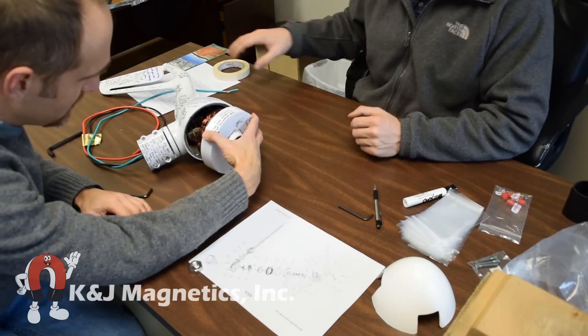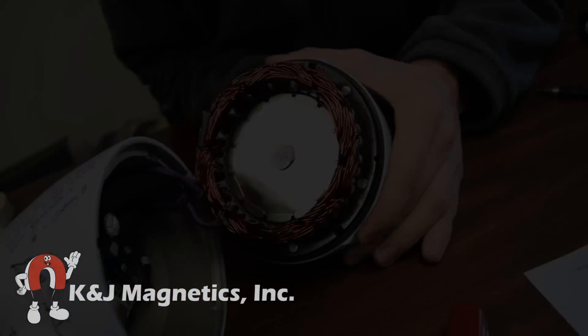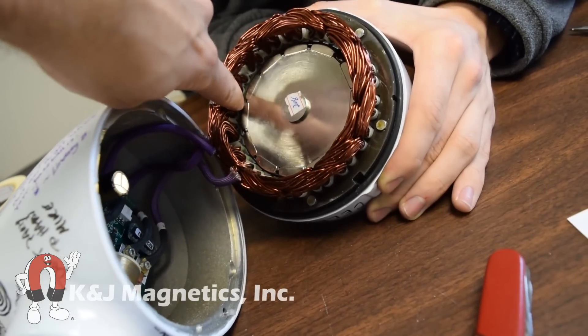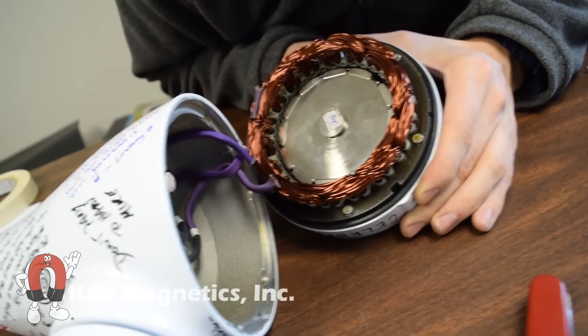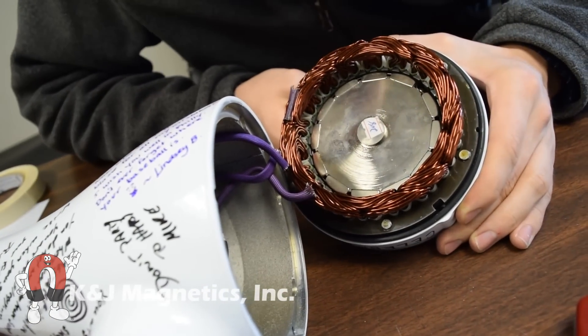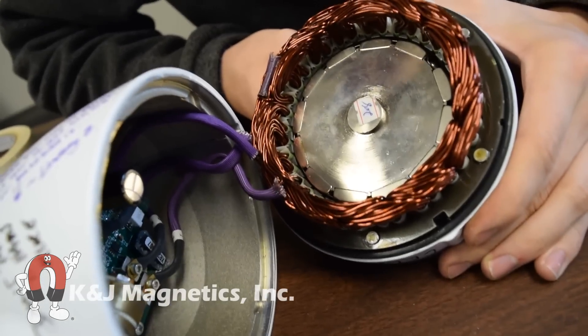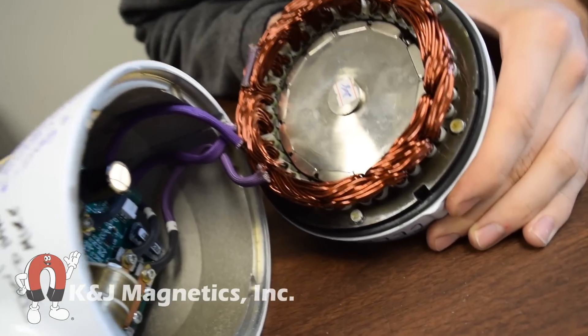Inside we found a rotor that had a series of magnets around the outside of it facing coils of wire. It looked pretty intricate in there and we wanted to understand just what was going on.